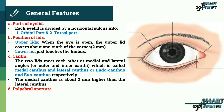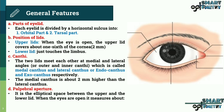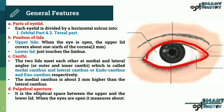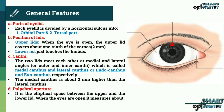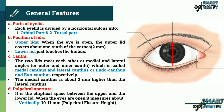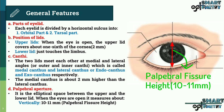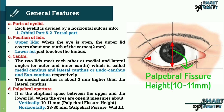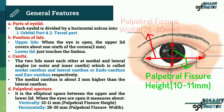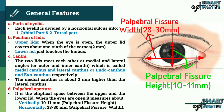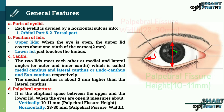The palpebral aperture is the ellipsoid space between the upper and lower lid. When the eyes are open, it measures vertically 10 to 11 mm, which is called palpebral fissure height, and horizontally 28 to 30 mm, which is called palpebral fissure width.